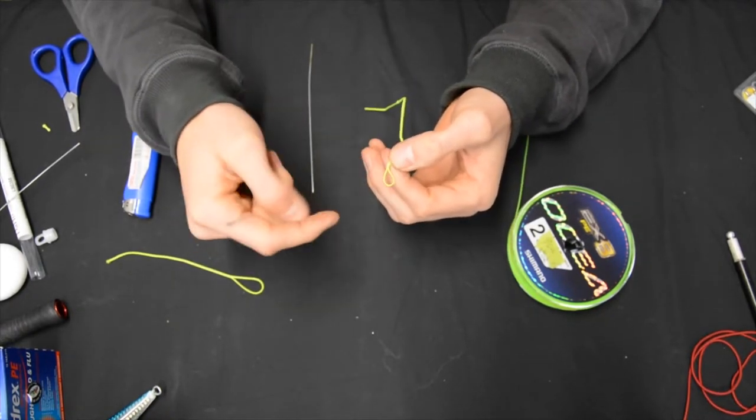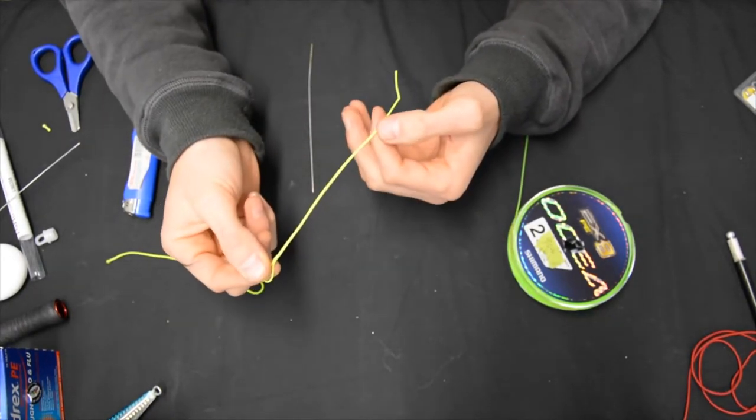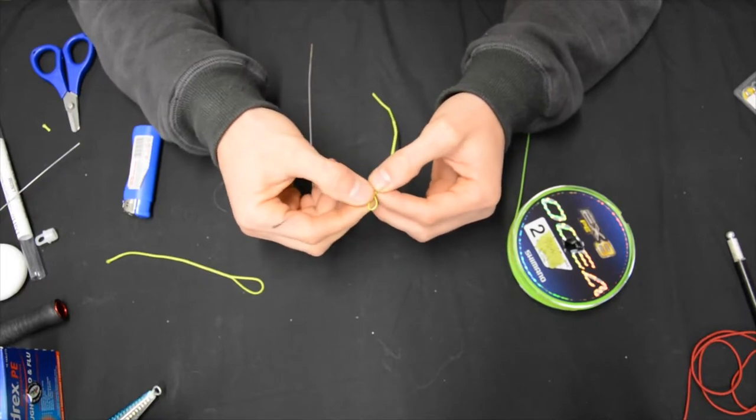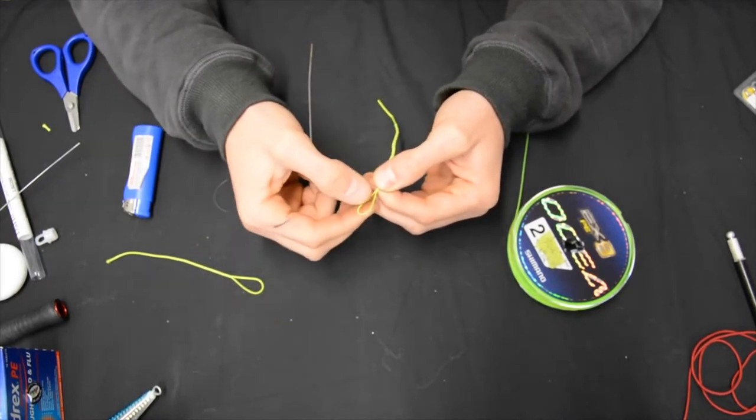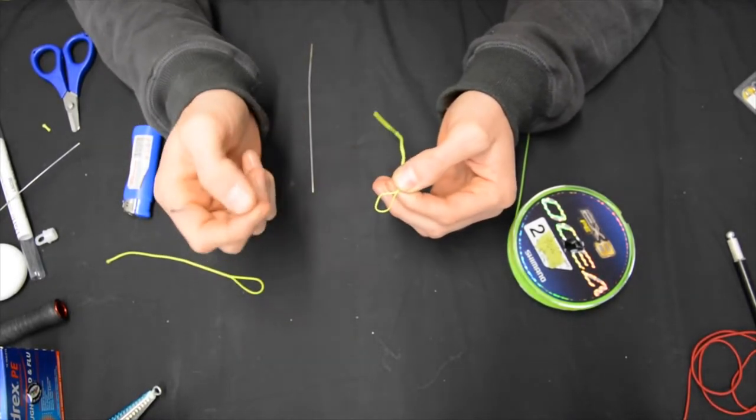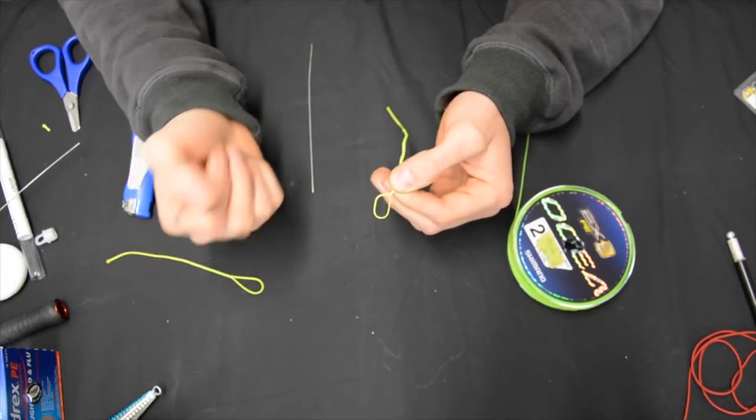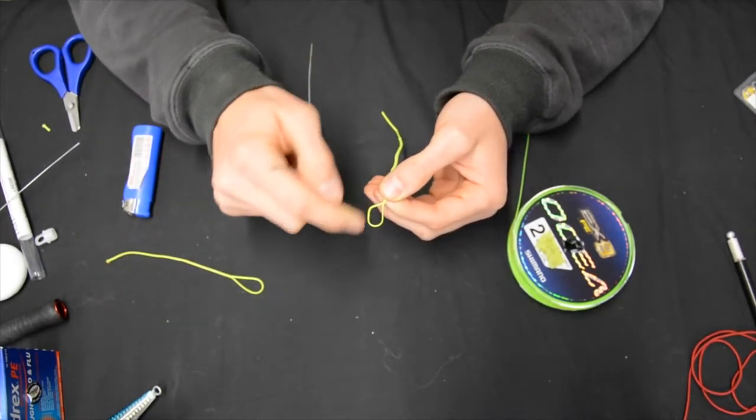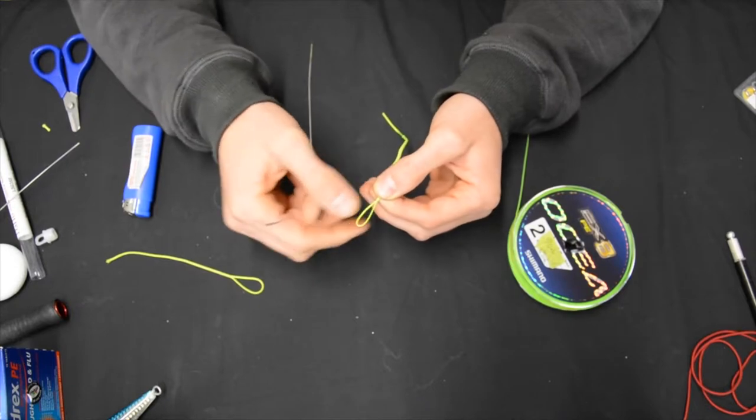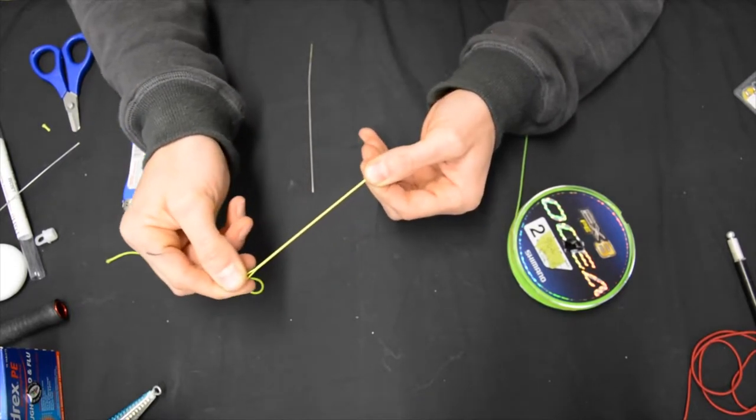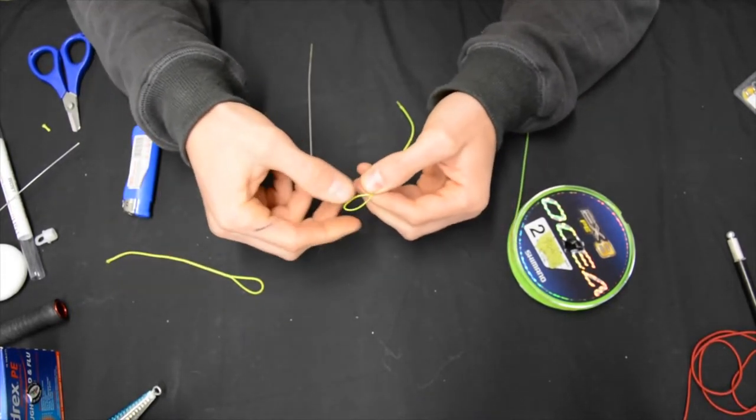Now I've got my loop and I've got the double Dacron. What I want to do from here is actually want to create the size of my loop. So you don't need a huge loop. Like it's only going into a small, either like a gold finger or a black's clip. So you don't need a massive loop. From there you just make your loop and you just pull the rest of the Dacron down so it's tight over the other side.